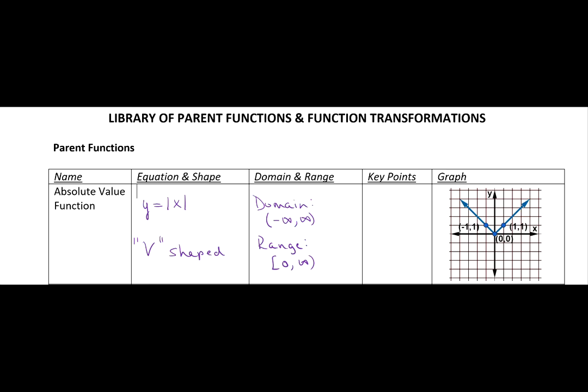For the purposes of using three key points when we learn transformations, let's pick some easy points on the graph right around the origin. We'll pick negative one, one, because if x is negative one, the absolute value of negative one is one. We'll pick zero, zero—if x is zero, the distance from zero is zero. And we'll pick one, one.